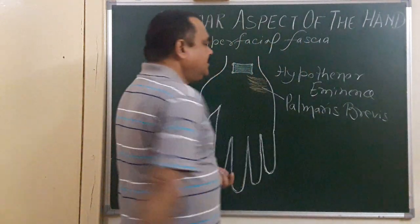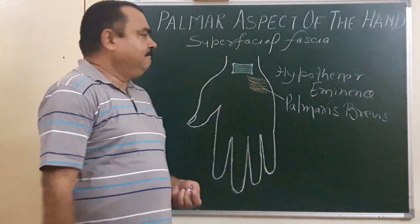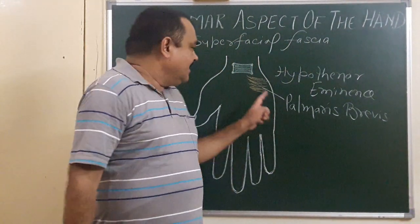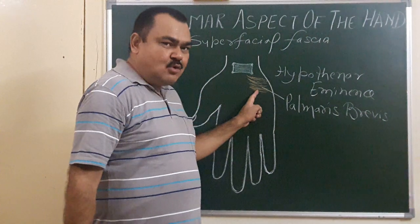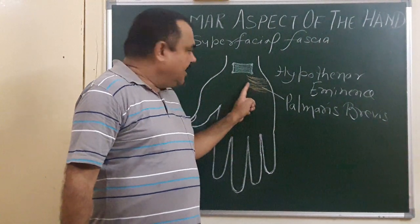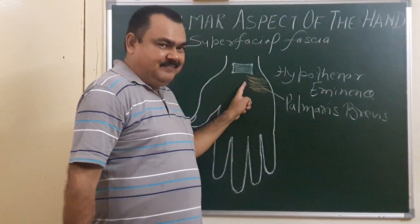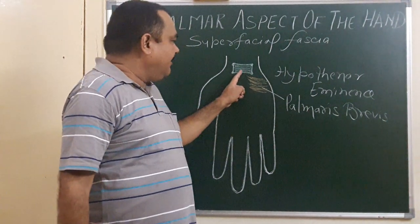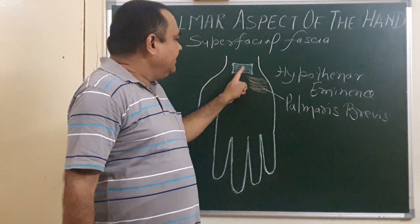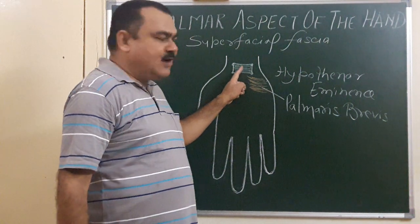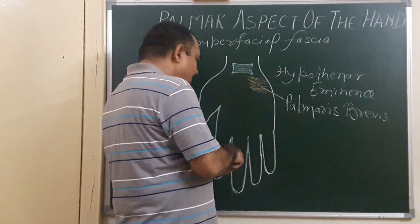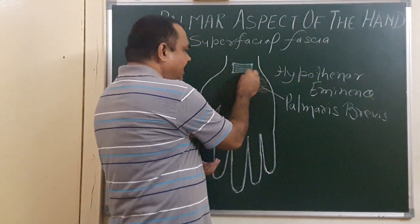This muscle is present in the superficial fascia. This muscle takes origin from the deep fascia — that means it takes origin from here. This is the flexor retinaculum, and some fibers arise from the flexor retinaculum.